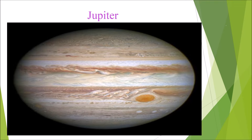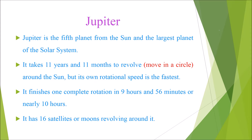Next we are going to learn about Jupiter. Jupiter is the fifth planet from the sun and the largest planet of the solar system. It takes 11 years and 11 months to revolve around the sun, but its own rotational speed is the fastest — it finishes one complete rotation in 9 hours and 56 minutes, or nearly 10 hours. It has 16 satellites or moons revolving around it.